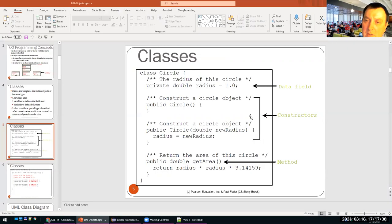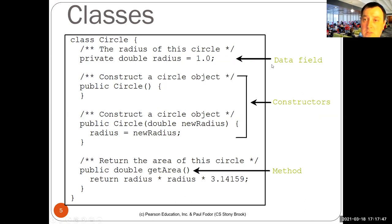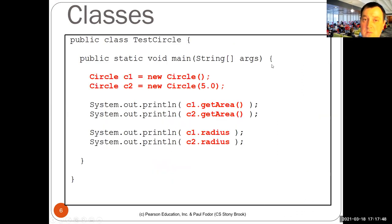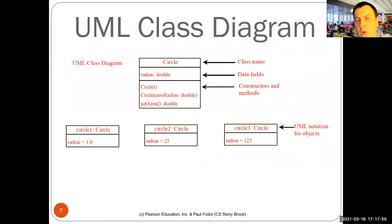We'll learn all of that in time. For the moment, the most important thing is that we can create classes and initialize those classes for multiple objects, and each object has its own behavior and its own state.